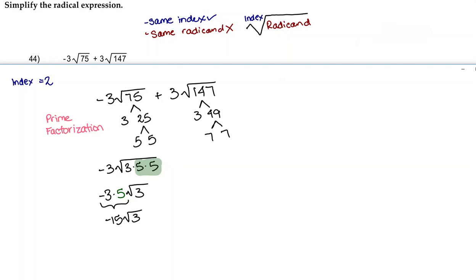So we're going to rewrite this term, bringing down our radical, and then instead of writing 147 we're going to write 3 times 7 times 7. Here we have another group that we can take out, so I'm going to take out a 7 and then bring down my 3 on the outside and my radical 3 on the inside. Now we're just going to multiply the 3 and the 7, which is 21, bringing down my radical 3.